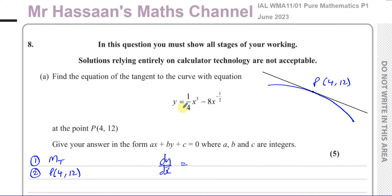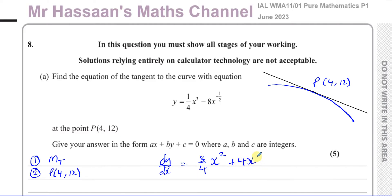We multiply the power by the coefficient: 3 times a quarter gives three quarters, x to the power of 2. Then minus a half times minus 8 — multiplying those gives positive 4, x to the power of negative three over two.